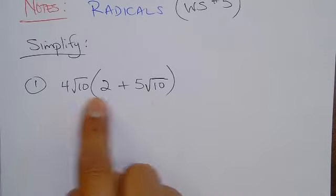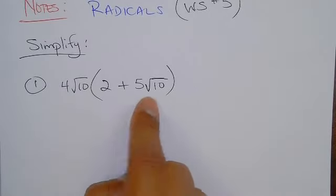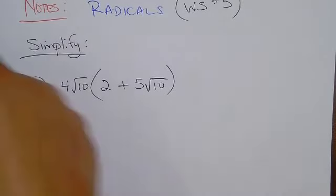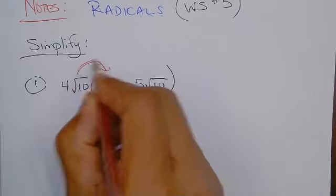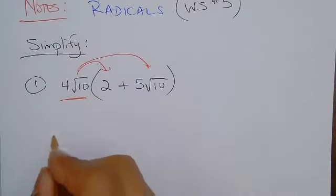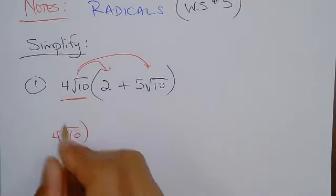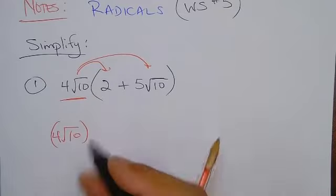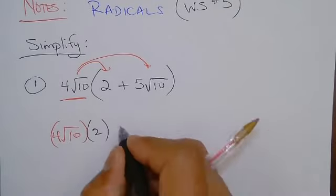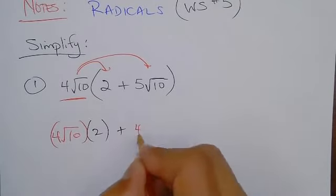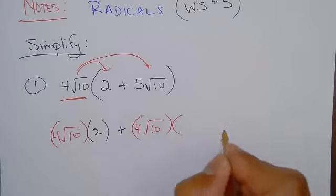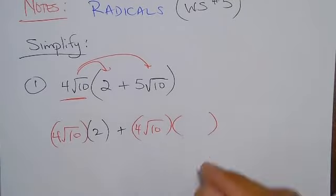This number is being multiplied to this expression. And you're going to do distributive property. This 4 root 10 gets multiplied to the first one plus and then that 4 root 10 gets multiplied to the second one.